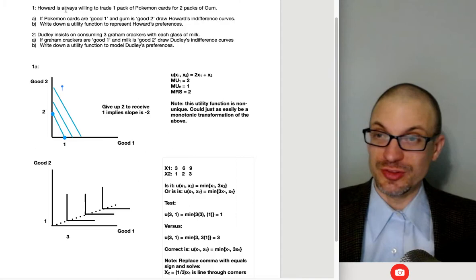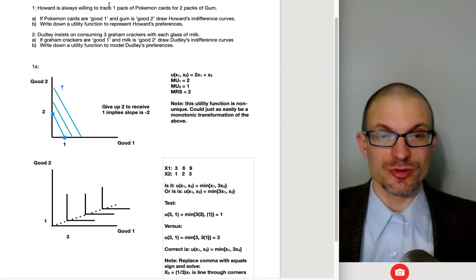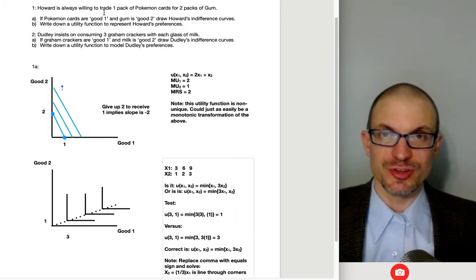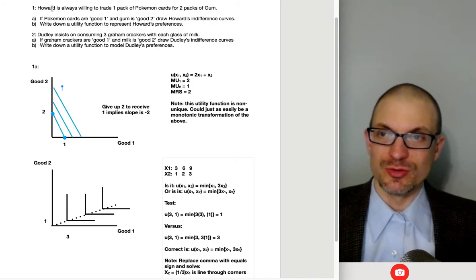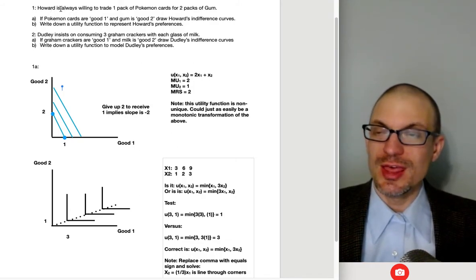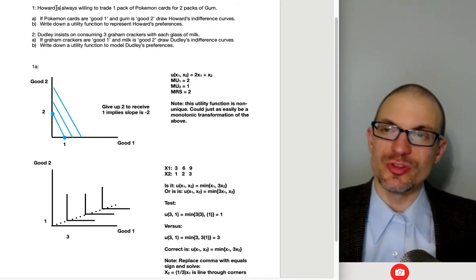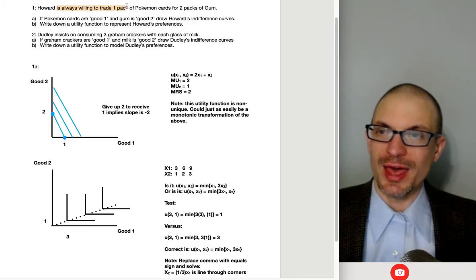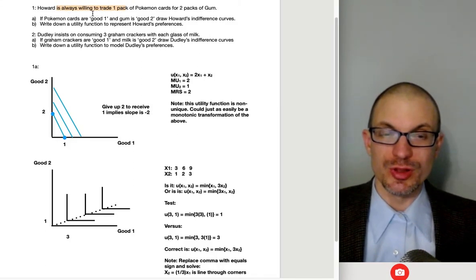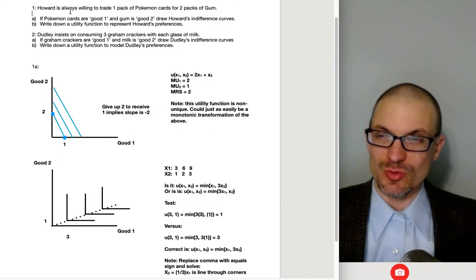Yeah, because it says we're always willing to trade one for two, we're expecting this is going to be perfect substitutes preferences, right? We're trading off at a constant rate. And it's actually really important that it says always willing to trade one pack. Always. This implies, indeed, we're willing to trade off one for the other at a constant rate.